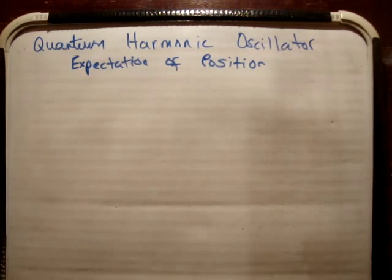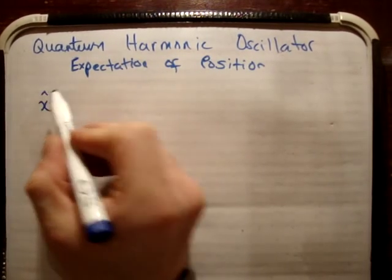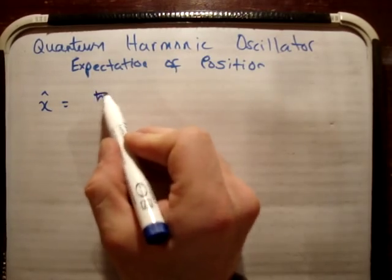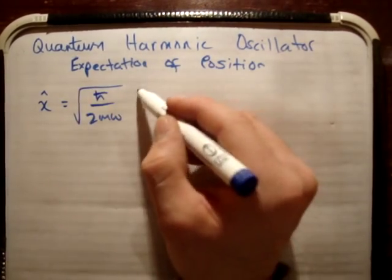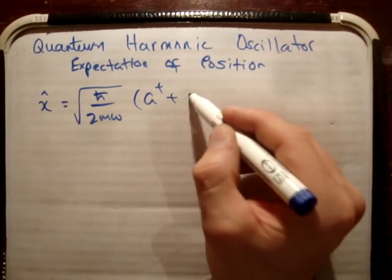In this video, I'd like to calculate the expectation of position. So we're going to use our position operator. The position operator is something I've calculated before, and it's h bar over 2m omega squared rooted outside of a plus plus a minus.